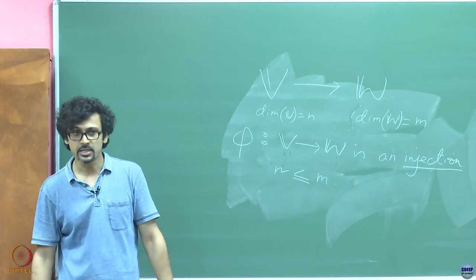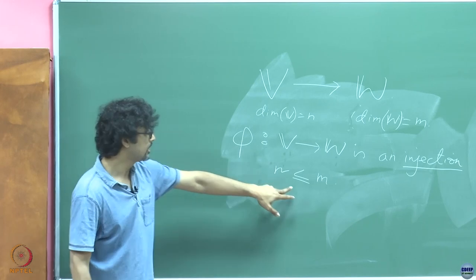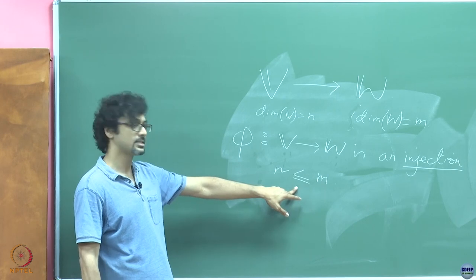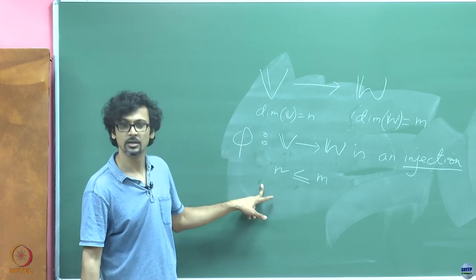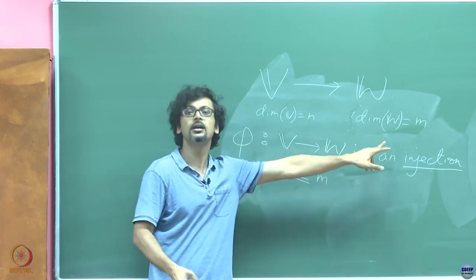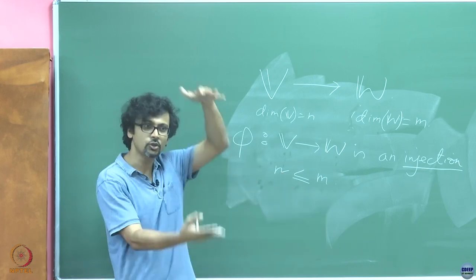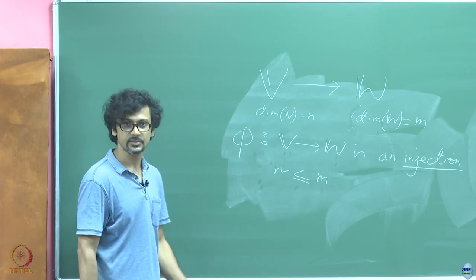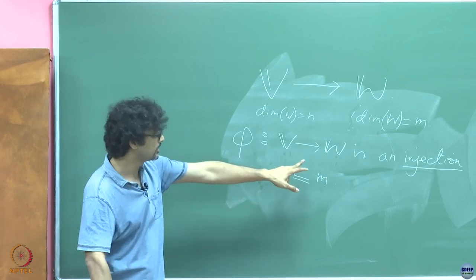In the language of matrices, if you are looking at matrices as a special case of linear transformations, we are talking about tall matrices, because matrices that map from N-dimensional to M-dimensional spaces are M×N. So if N is less than or equal to M, it is a tall kind of matrix. What other property do we need for the existence of such an injection?